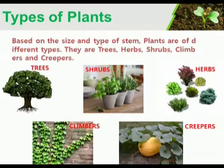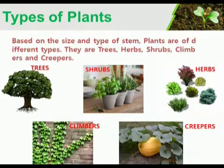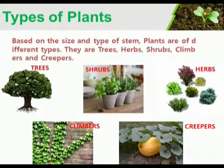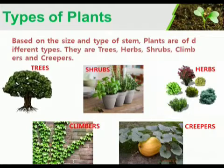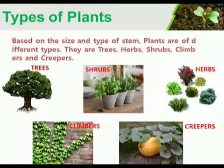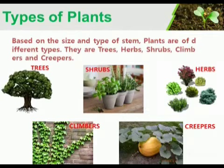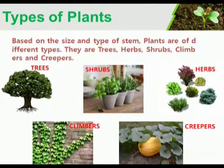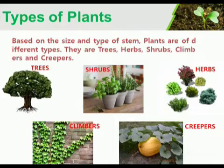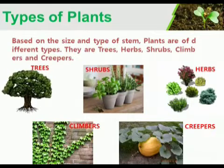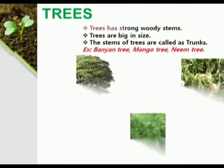There are many types of plants around us. Plants are of different shapes and sizes. There are mainly five types of plants. Based on the size and type of stem, plants are of different types. They are trees, shrubs, herbs, climbers and creepers.